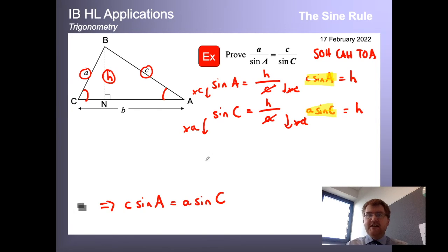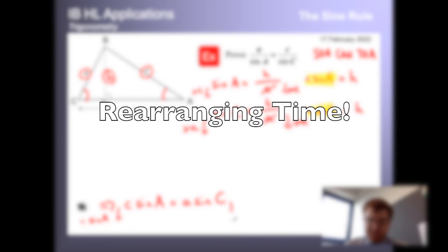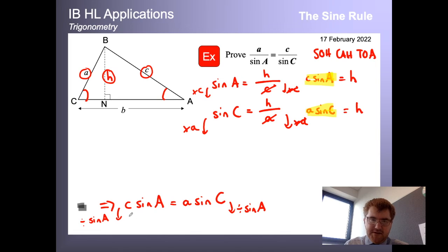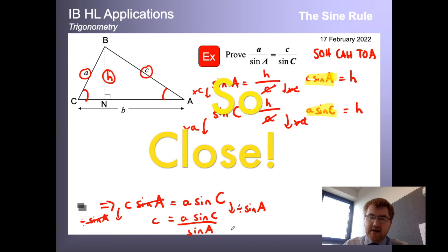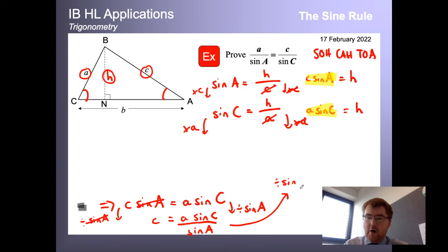And at this point, I can rearrange this to make it look like this. The way I'm going to do that is I'm going to divide by sine A on both sides. So if I divide by sine A on both sides, this cancels. We're left with C equals A sine C over sine A. And we're almost there now, but we can also do a similar thing with sine C. So I'm going to divide by sine C on both sides of the equation. And that leads to my answer of C over sine C is equal to A over sine A.